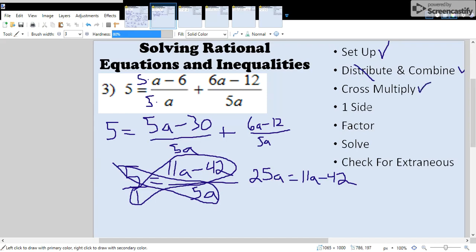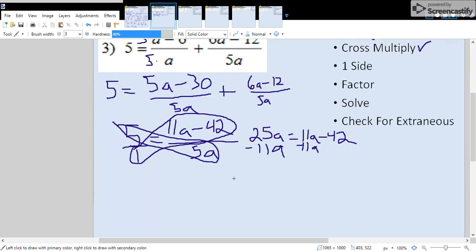Now we're going to move everything to one side of the equation. Let's move everything over to the left side. Go ahead and subtract 11a from both sides of the equal sign. So then we get 14a equals negative 42. Let's add 42 to both sides now. We can't add a's and constants together, so we just write it out like this: 14a plus 42 equals 0. So we're done with that step.